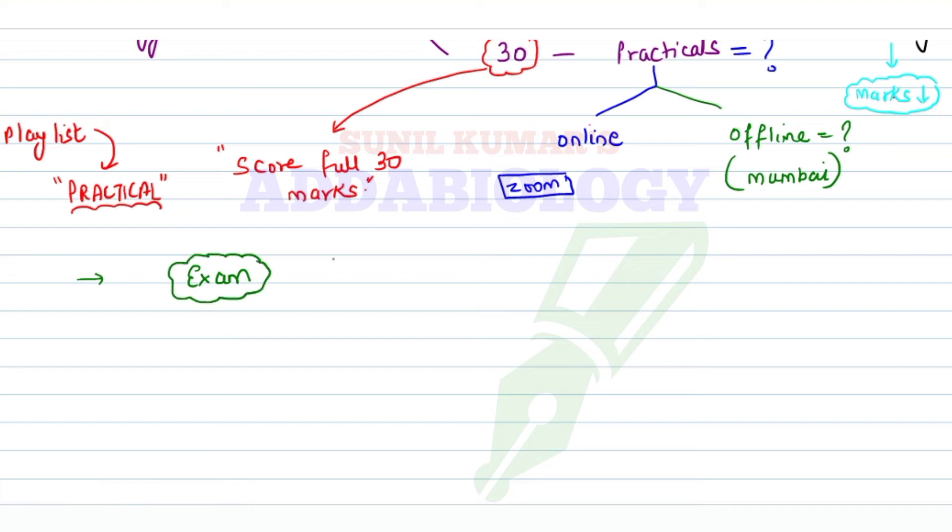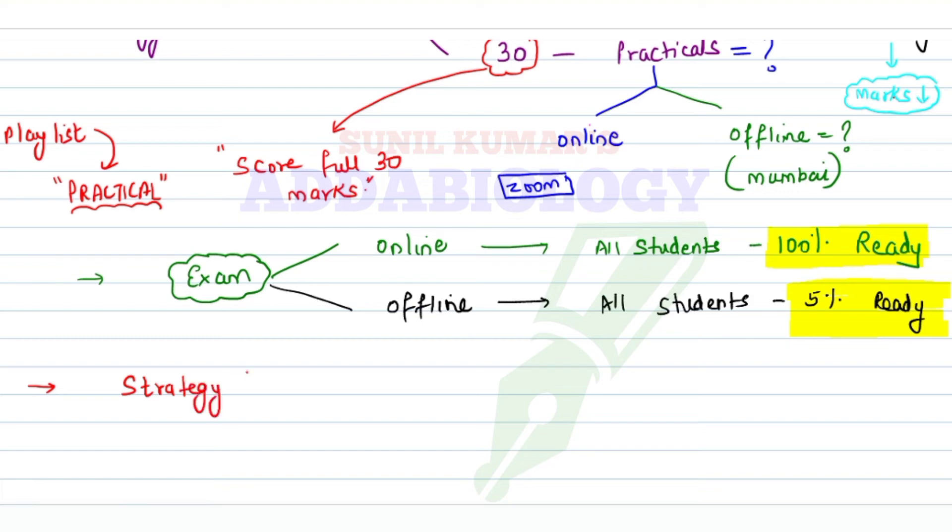When we talk about exams, if it's online, all my students are 100% ready and can score more than 90%. But if it's offline exam, I can say only 5% might be ready. So are 95% of students going to fail? Definitely not. Watch this video till the end to understand how to prepare a strategy to score 80% marks in biology.